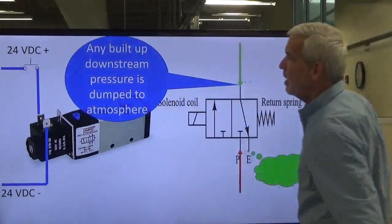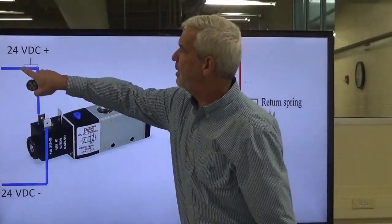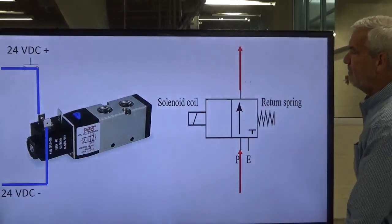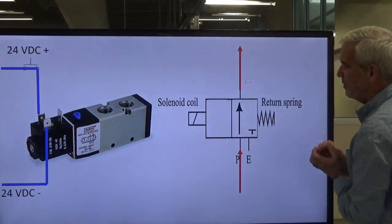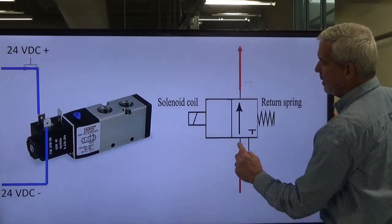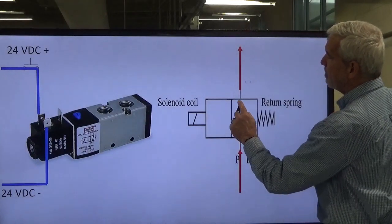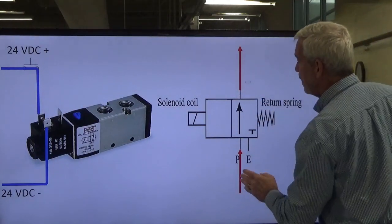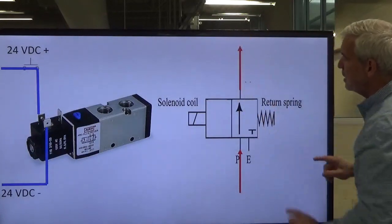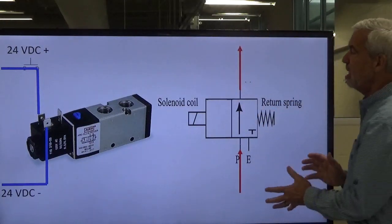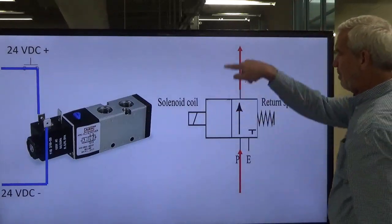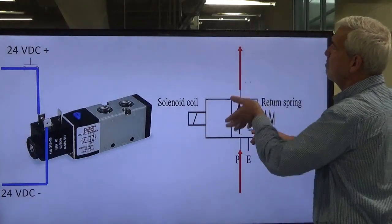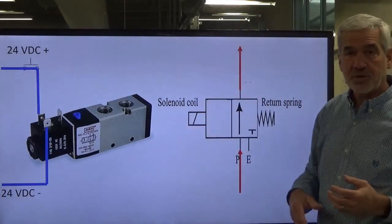When I press my push button and provide a path for voltage to energize the coil, that magnetic field shifts that valve. When it shifts, now the spool is allowing air to pass through to our downstream system. Notice there is no pathway to exhaust - we're capturing and trapping all that air and moving it in our system. All of our system pressure is going to all the components we're trying to control.